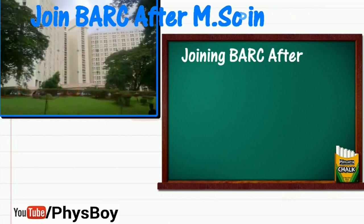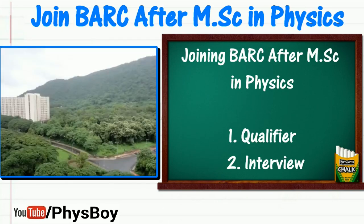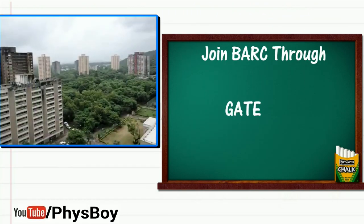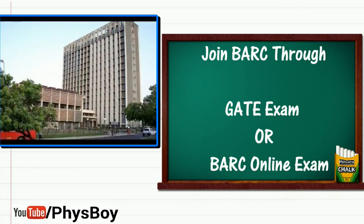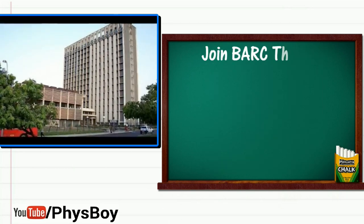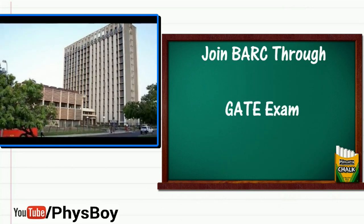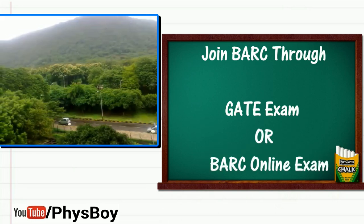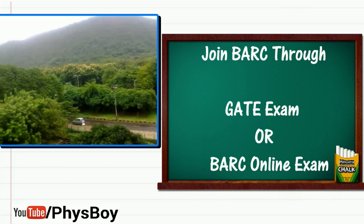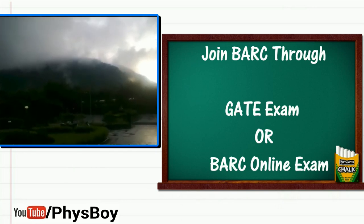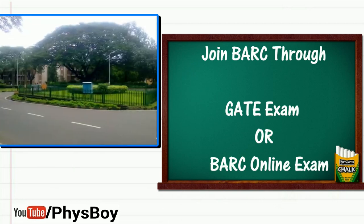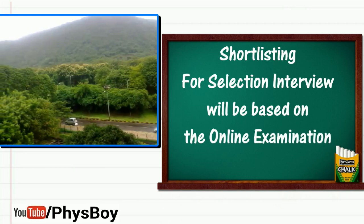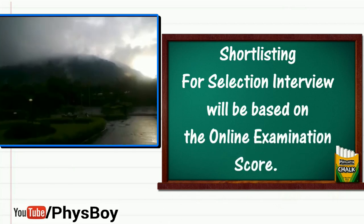Joining BARC after MSc in Physics is a two-stage process. The first is the qualifier and the second is the interview. For the qualifier, you need to qualify in the BARC online examination or you need a very good rank in the GATE physics exam. Candidates are shortlisted for interview on the basis of either of these two exams — you have to clear either the BARC objective type online examination or the GATE score cutoff of BARC. This cutoff is not the same every year.